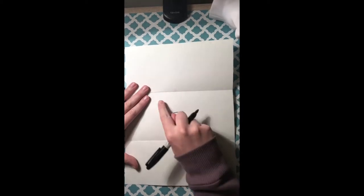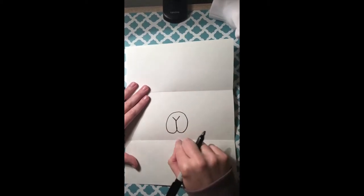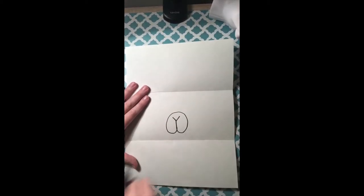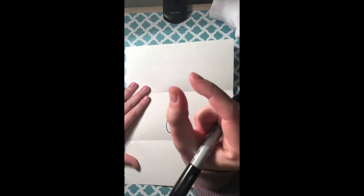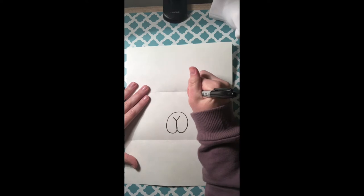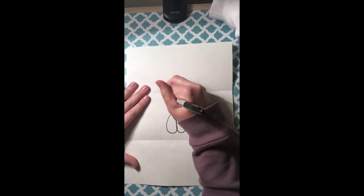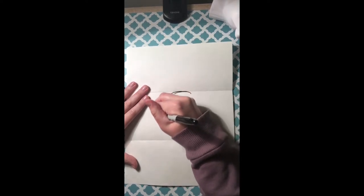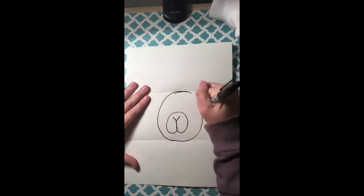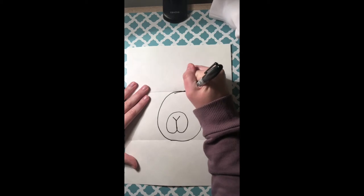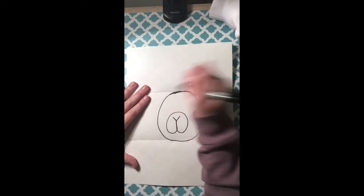Then I have to draw the head. That's why we folded this paper — to make guidelines for where our head can be, so it's nice and centered and we don't accidentally make it the size of a grape. I'm gonna start at the top, draw a curved line right on that line, down to the bottom line and up and around. If your head is a little bit wider than mine, that's totally fine. Every bunny is unique.